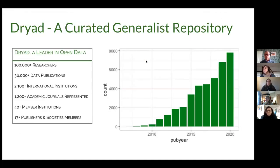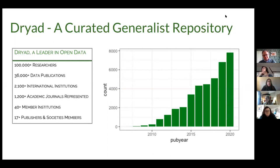We are a curated generalist repository, meaning we take data from all different domains of research and curate all datasets that come through. Founded in 2010, over the last ten years we've seen increasing interest and deposits, reflecting overall shifts around data publishing. Our collection represents more than 100,000 researchers, 36,000 data publications, over 2,100 international institutions, datasets associated with more than 1,200 journals, and publisher and institutional members supporting Dryad.